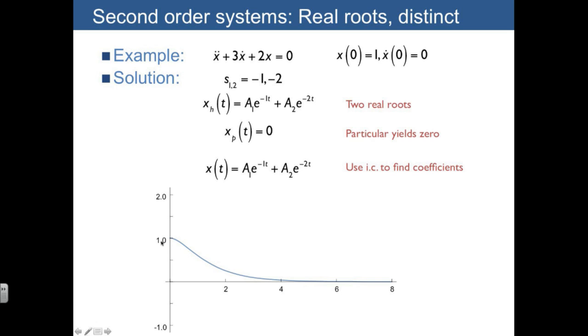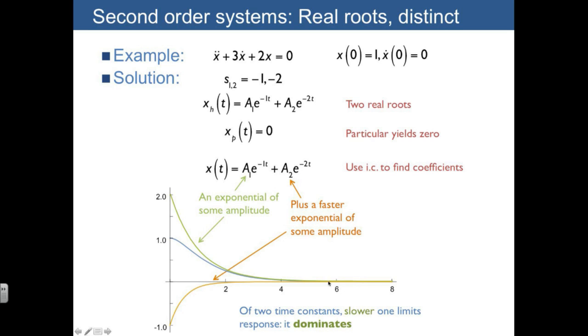And what's interesting is to also plot the two terms that actually contribute to this. One is e to the negative 1t, where if we solve for the amplitude, we'd actually find that it's equal to 2. And then the second one is e to the negative 2t, which in this case ends up having amplitude negative 1. These two things add up together, but what's important to note is that when you have two real distinct roots, one of them is always slower than the other. In this case, it's the e to the negative 1t that's slower. And its slowness is what's going to limit the approach to the final value. And so we usually say that the slower response is the one that dominates, and the slower of the two time constants is called the dominant time constant.